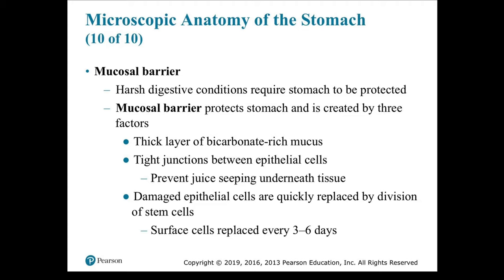The mucosal barrier protects the stomach from its harsh digestive conditions and is created by three factors: a thick layer of bicarbonate-rich mucus; tight junctions between epithelial cells that prevent juice from seeping beneath the tissue; and rapid replacement of damaged epithelial cells by stem cell division — surface cells are replaced every three to six days. This high rate of cell division explains why radiation and anti-cancer drugs that inhibit mitosis have drastic effects on the digestive tract, causing cumulative damage to the epithelial lining and problems with nutrient absorption.